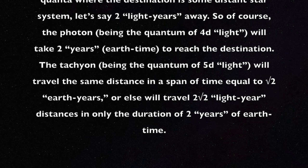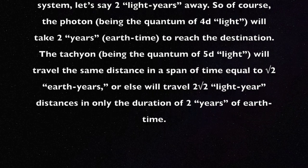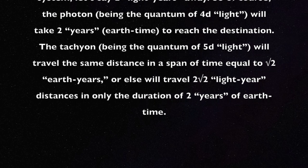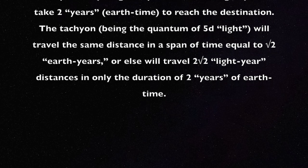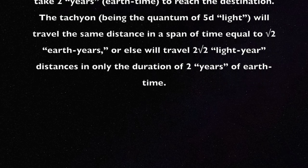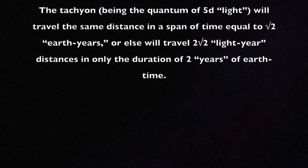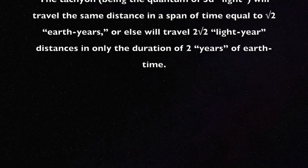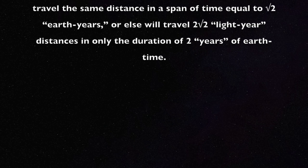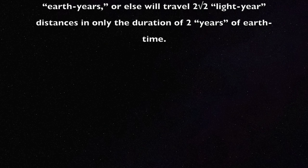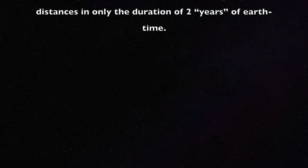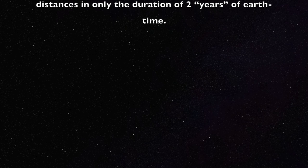Let's say two light years away. So of course the photon, being the quantum of 4D light, will take two years, Earth time, to reach the destination. The tachyon, being the quantum of 5D light, will travel the same distance in a span of time equal to the square root of two Earth years, or else will travel two times the square root of two light-year distances in only the duration of two years of Earth time.